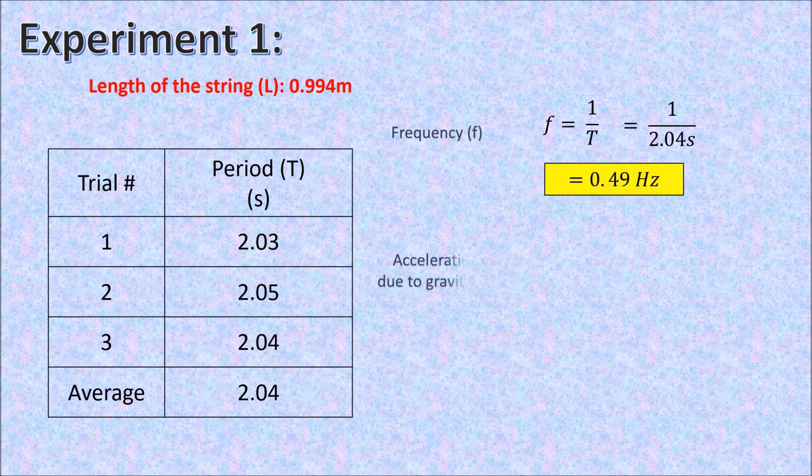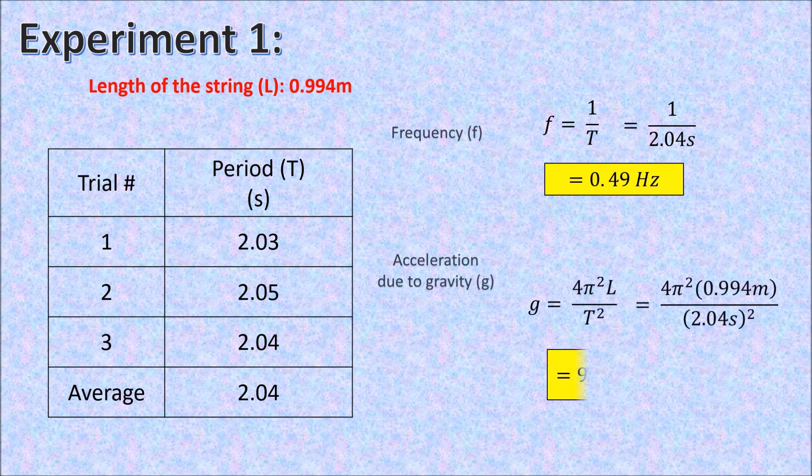To get the frequency, we will get 1 over period, so that is 0.49 Hz. And for the acceleration due to gravity, we compute it, and it is 9.41 m per second squared.